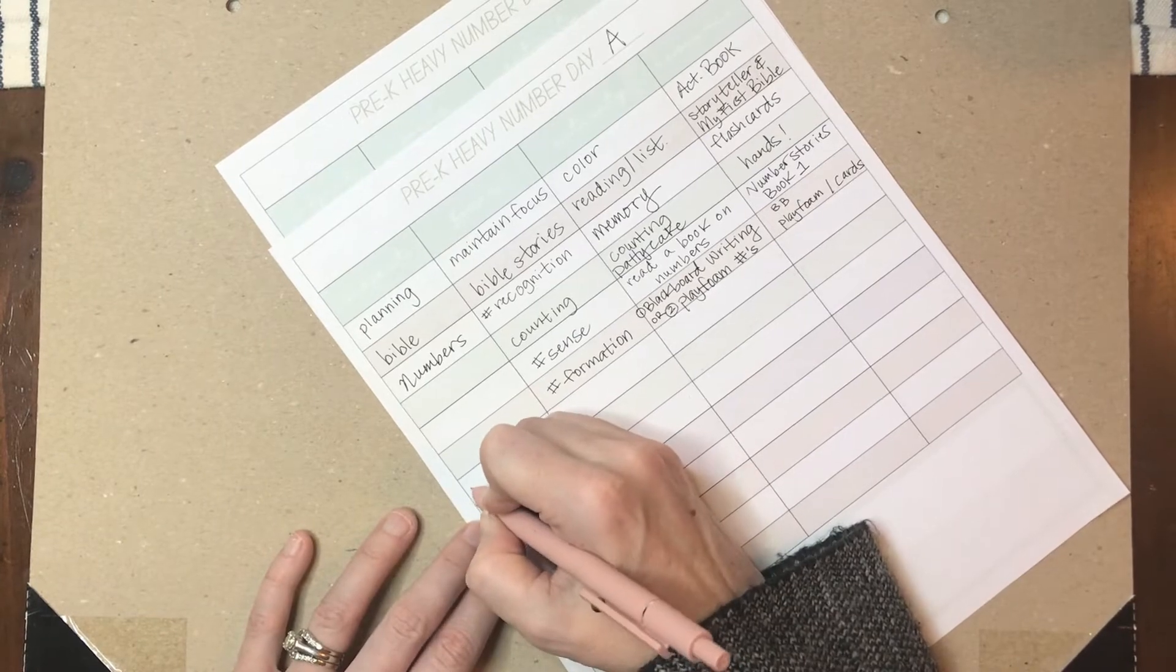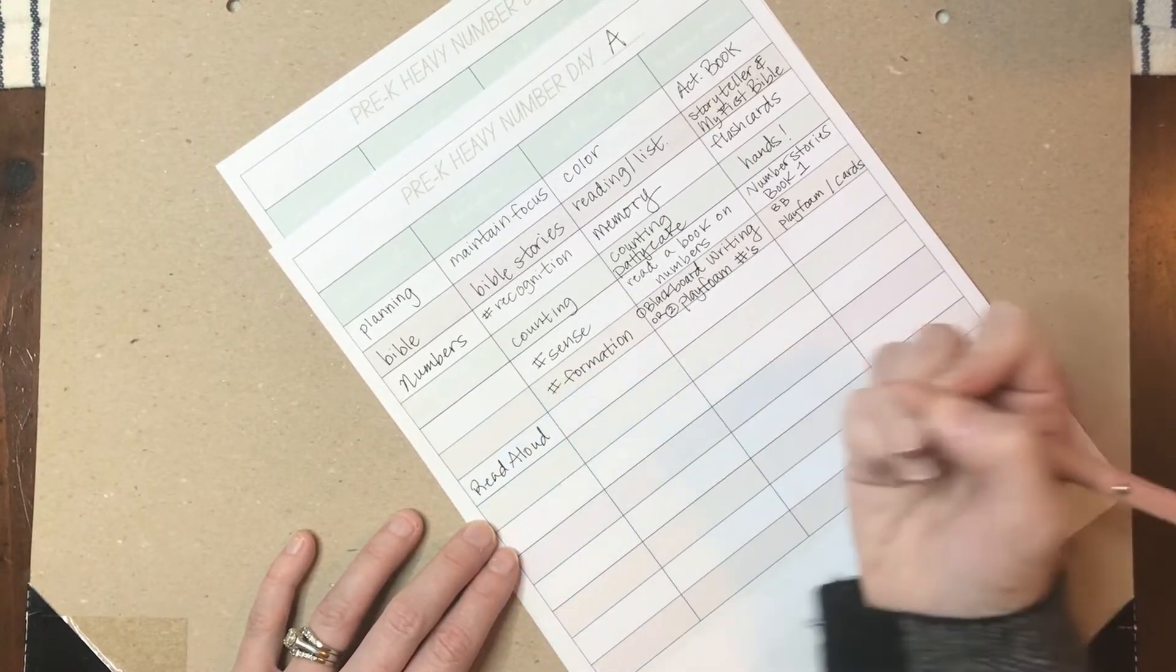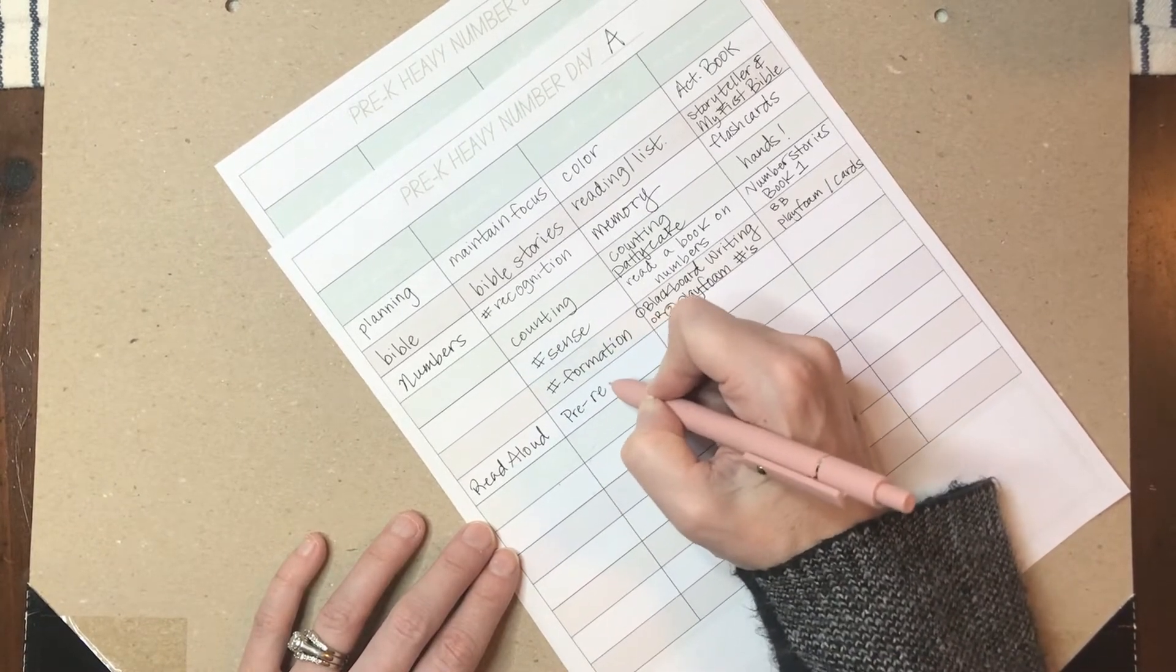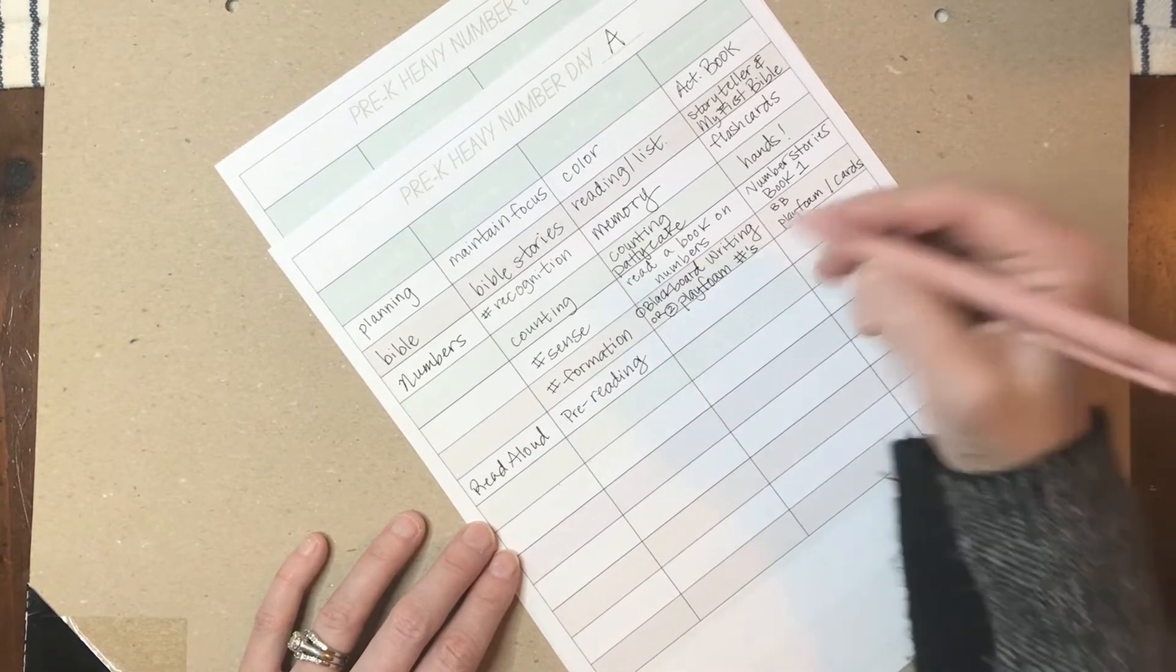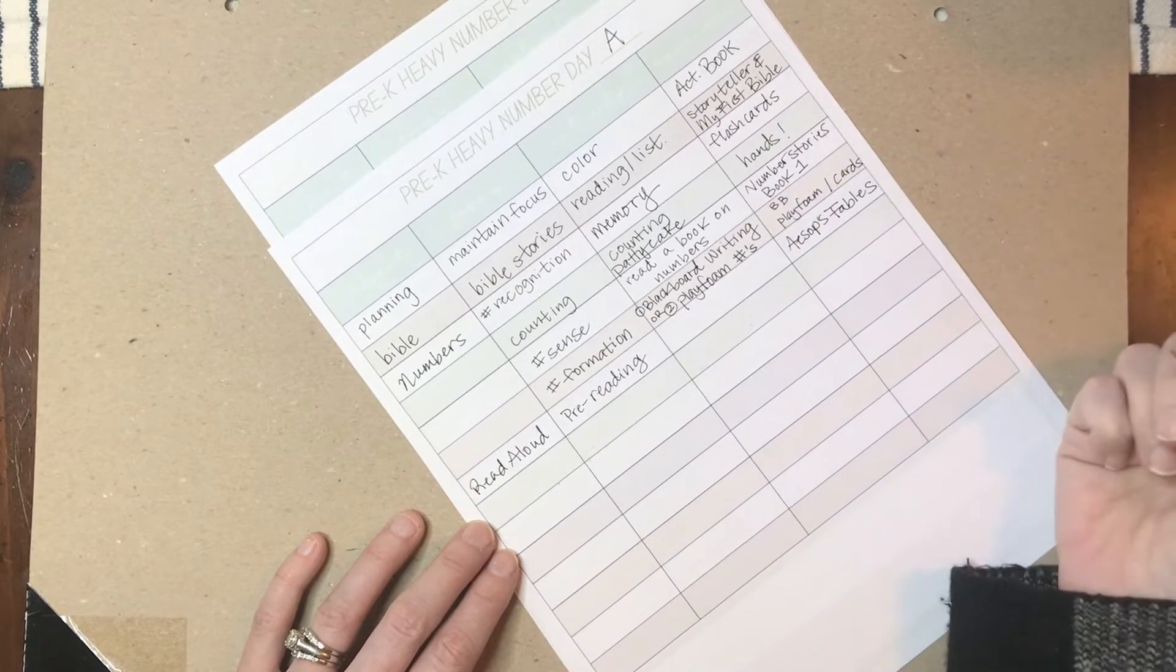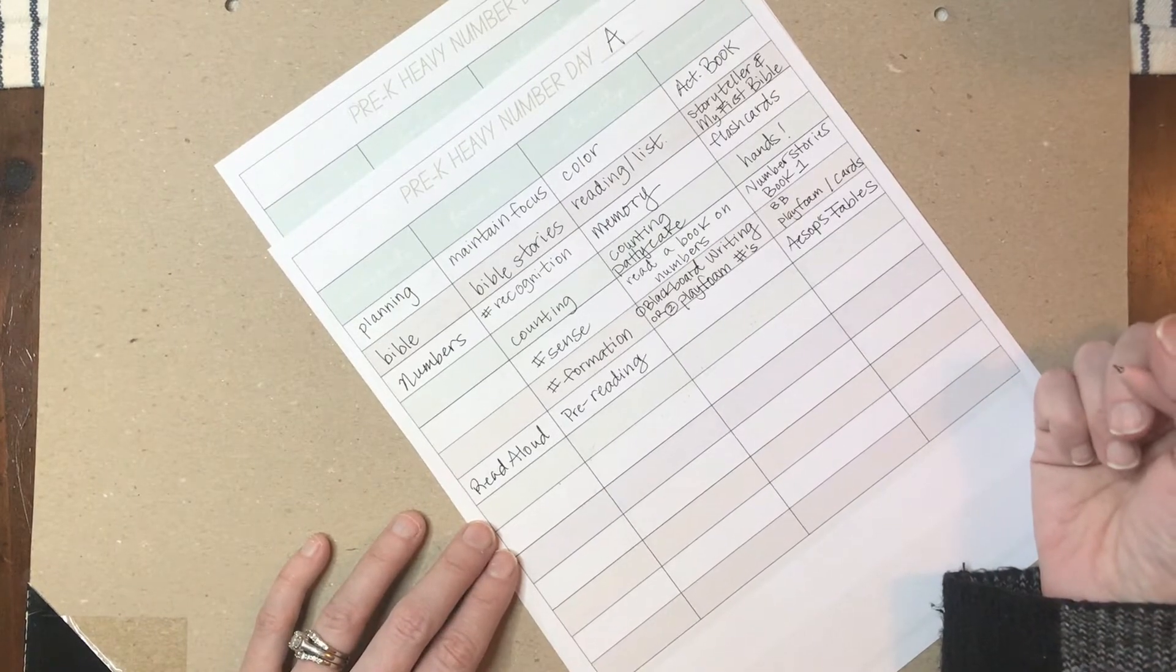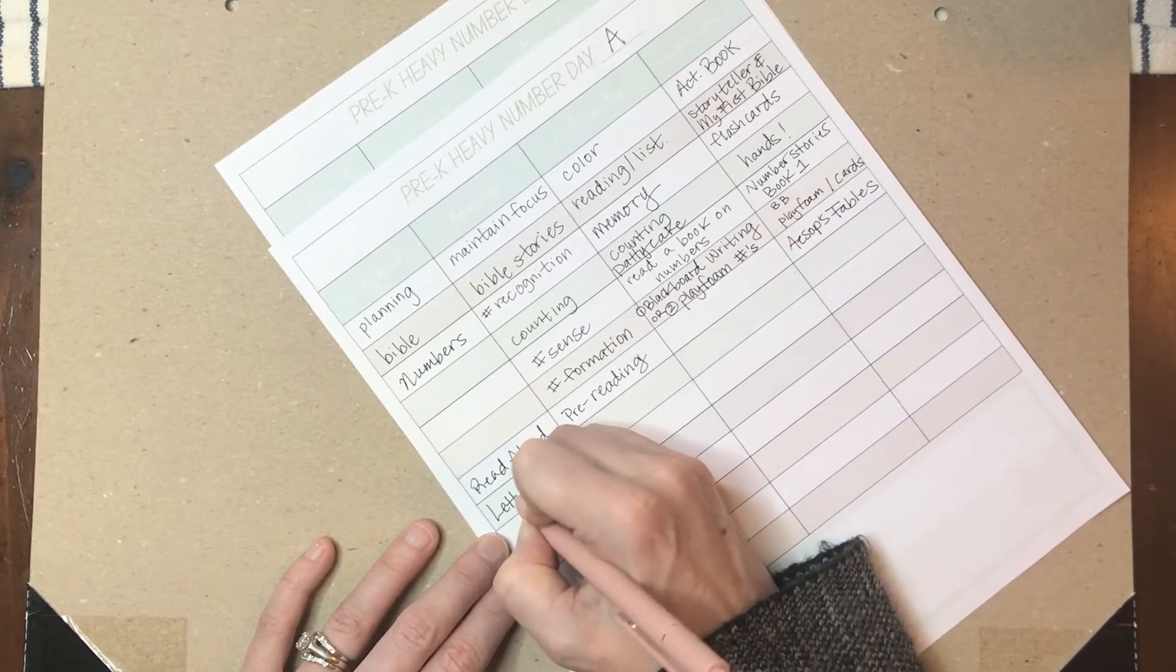Then we like to do a read aloud. I'm alternating two books right now. I'll just call this pre-reading. That's the focus. And we have been reading Aesop's Fables. You can read like a couple of them because they're so short. This one I have has great illustrations. I love it.